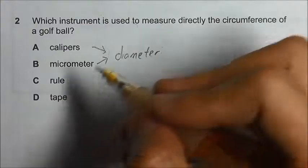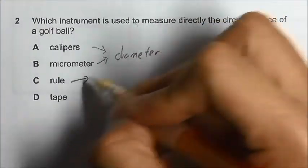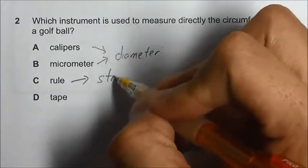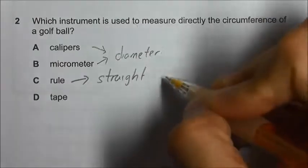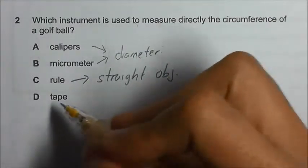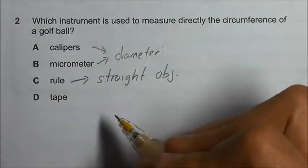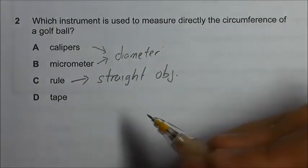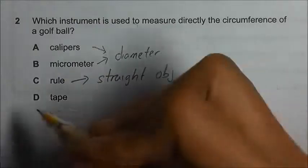For option C, meter rule - the meter rule is used to measure objects that are straight. So we are left with option D, which is a tape. The tape is able to go around the golf ball to measure the circumference directly.